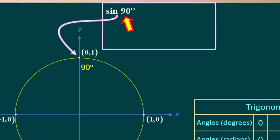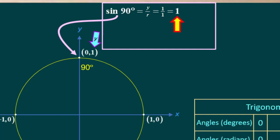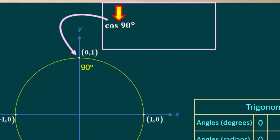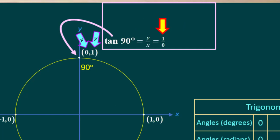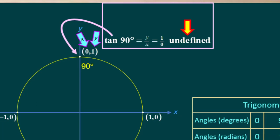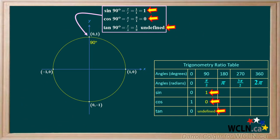Now we'll look at 90 degrees and start with the sine of 90. The sine is y over r, which is 1 over 1, or 1. The cosine of 90 degrees is equal to x over r, which is 0 over 1, or 0. And the tangent of 90 degrees is equal to y over x, which is 1 over 0. Dividing any number by 0 is undefined, so the tangent of 90 degrees is undefined. We'll record the values of sine, cosine, and tangent for 90 degrees in our table.